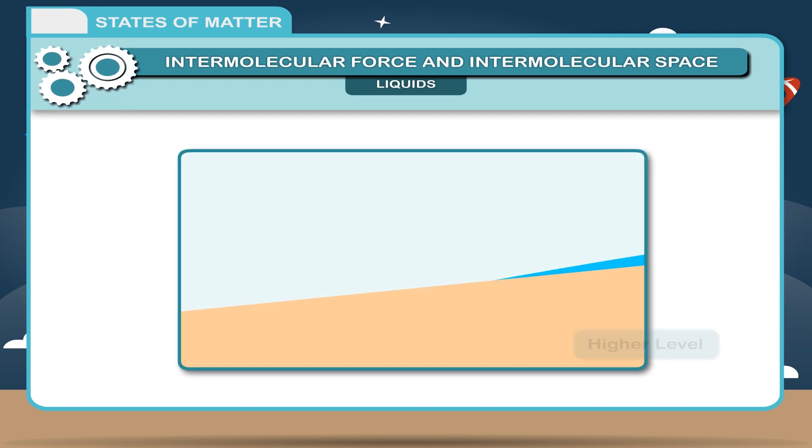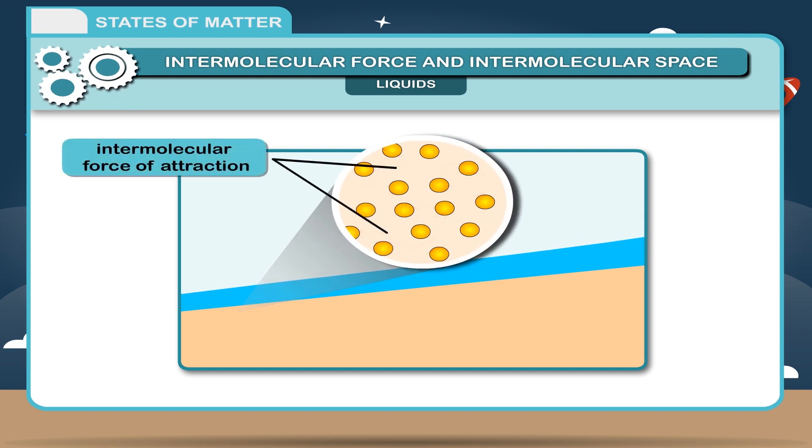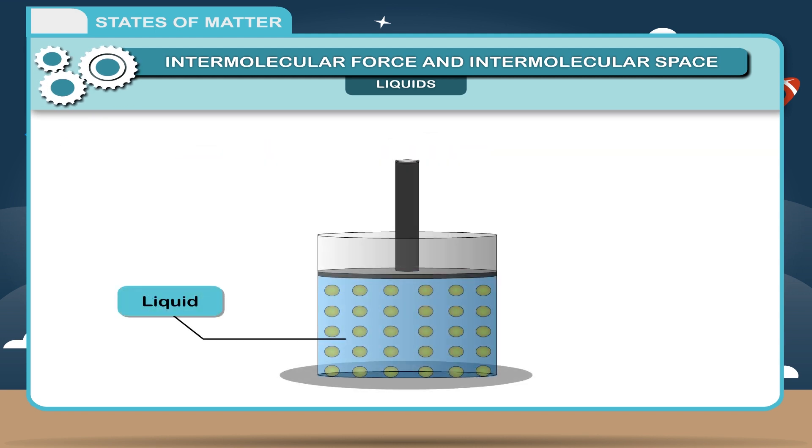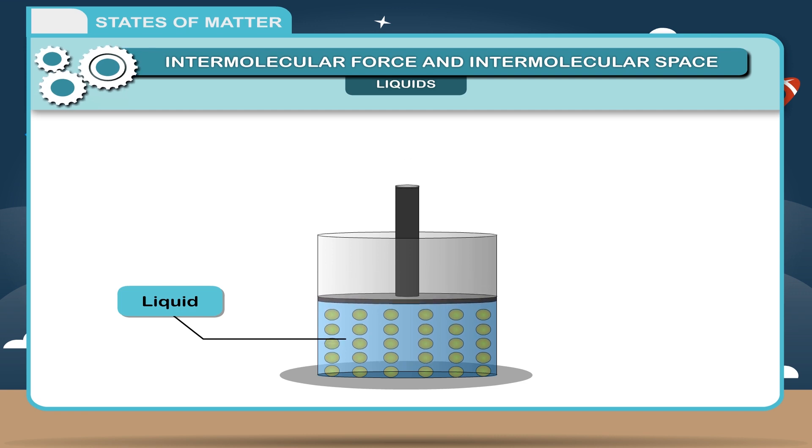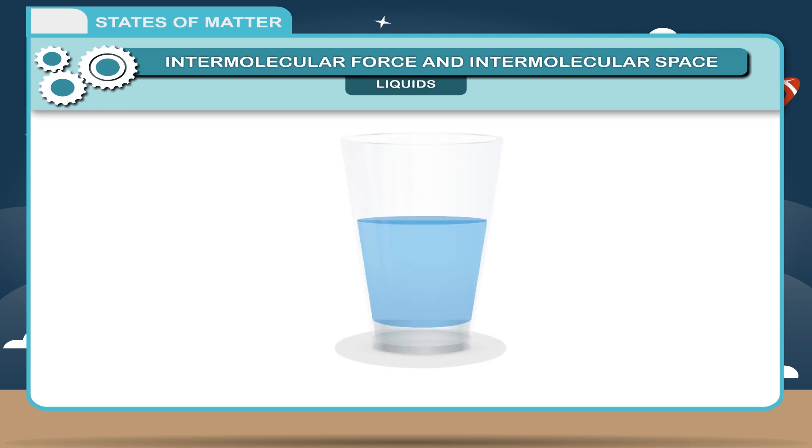Liquids flow from a higher level to a lower level under normal conditions. You can attribute this property to intermolecular force of attraction in liquids which don't allow molecules to stray. Liquids can be compressed slightly because they have a definite volume.